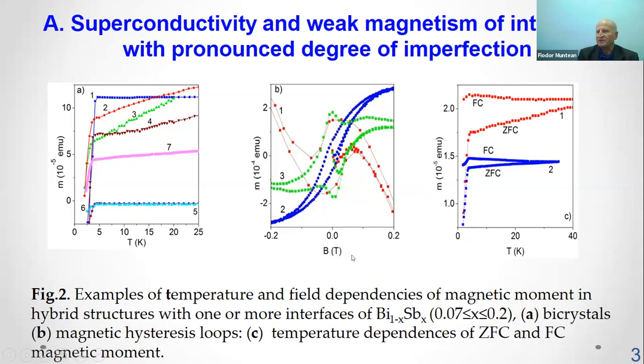The upper critical field in our structures take value corresponding to the zero temperature coherence length about 30 nanometer and the superconducting layer thickness of about 100 nanometer. They exceed the respective value for the bicrystal interfaces with two superconducting transitions. As a result of interaction of cooper electrons with structural imperfections,